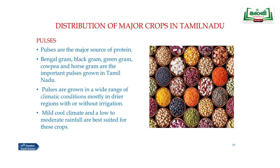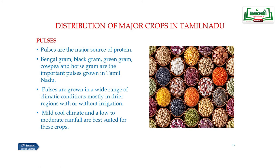The next important food crop is pulses. Pulses are the major source of protein. Bengal gram, black gram, green gram, cowpea and horse gram are the important pulses grown in Tamil Nadu. Pulses are grown in a wide range of climatic conditions, mostly in drier regions with or without irrigation. Mild cool climate and low to moderate rainfall are best suited for pulse crops.